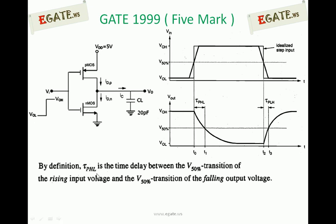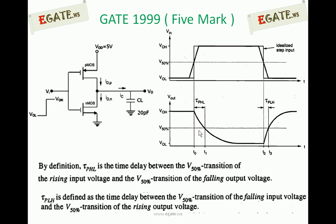By definition, TPHL — propagation delay from high to low — is the time delay between the V50% transition of the rising input and the V50% transition of the falling output voltage. The difference between these two points indicated with dotted lines is treated as TPHL. Similarly, TPLH is the time delay between V50% of the falling input voltage and the V50% transition of the rising output voltage.